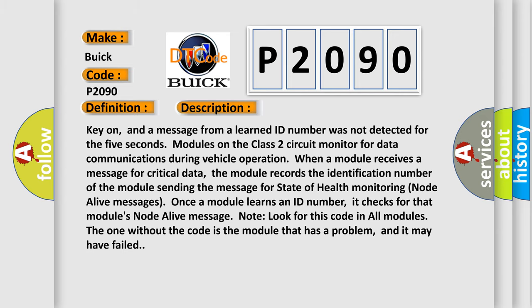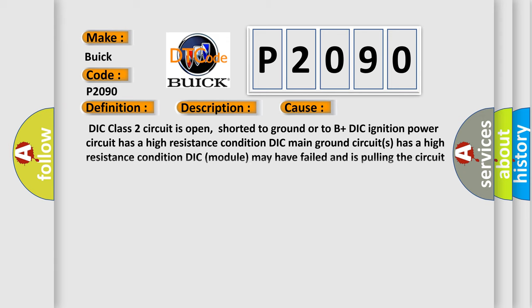This diagnostic error occurs most often in these cases: DIC class 2 circuit is open, shorted to ground or to B plus. DIC ignition power circuit has a high resistance condition. DIC main ground circuits has a high resistance condition. DIC module may have failed and is pulling the circuit low.